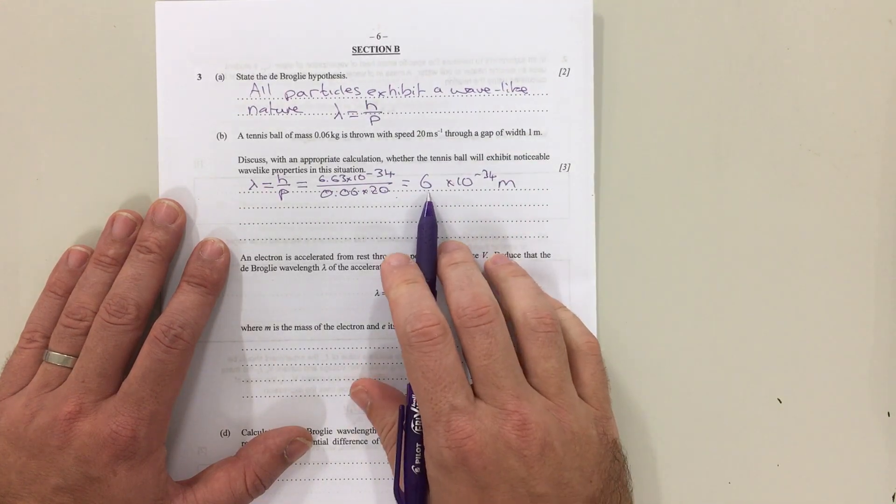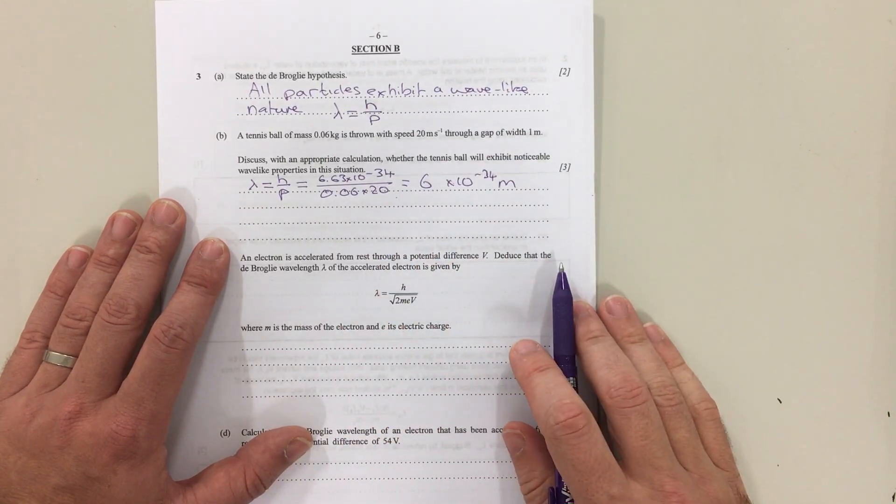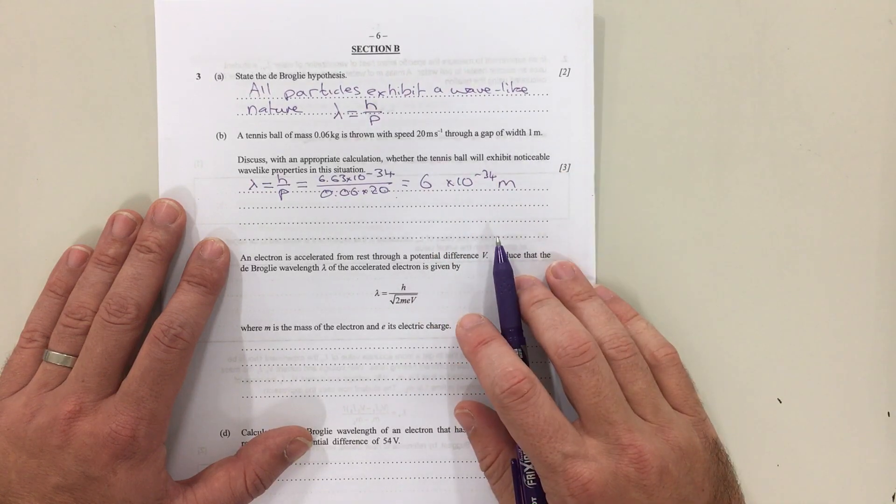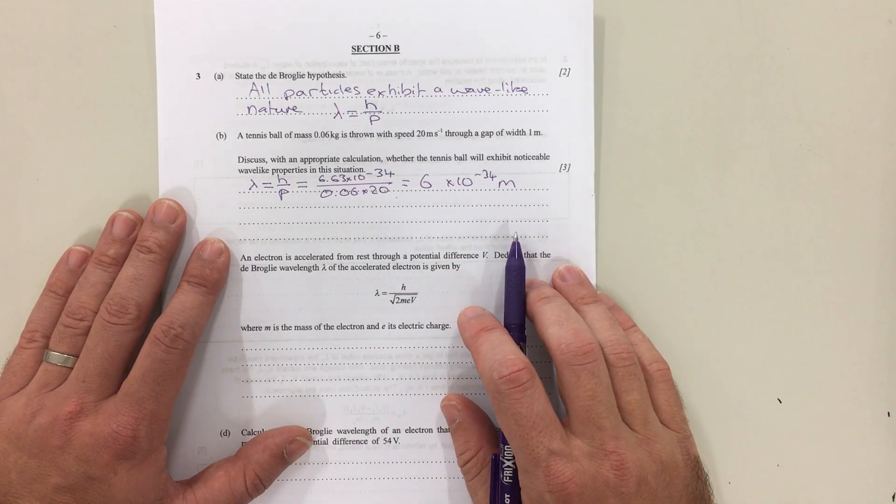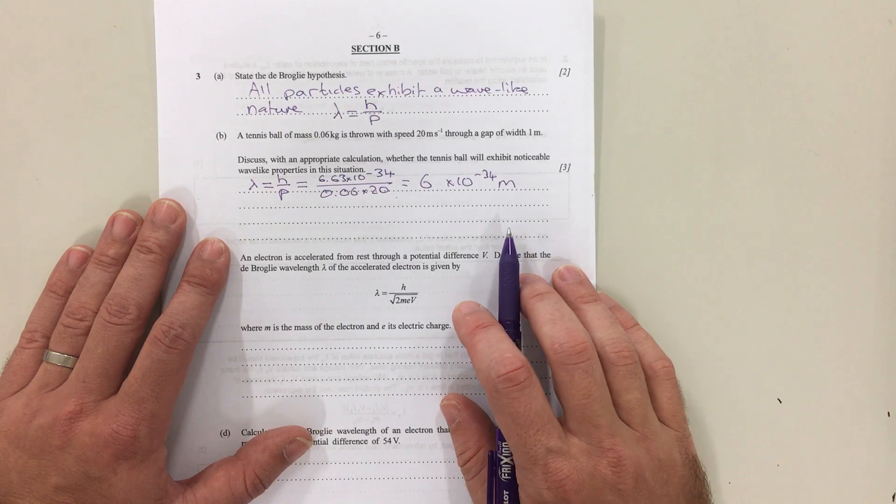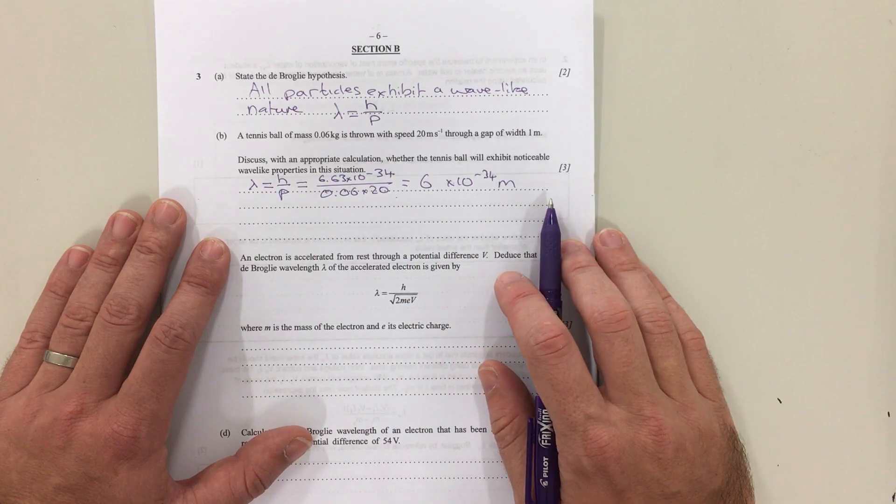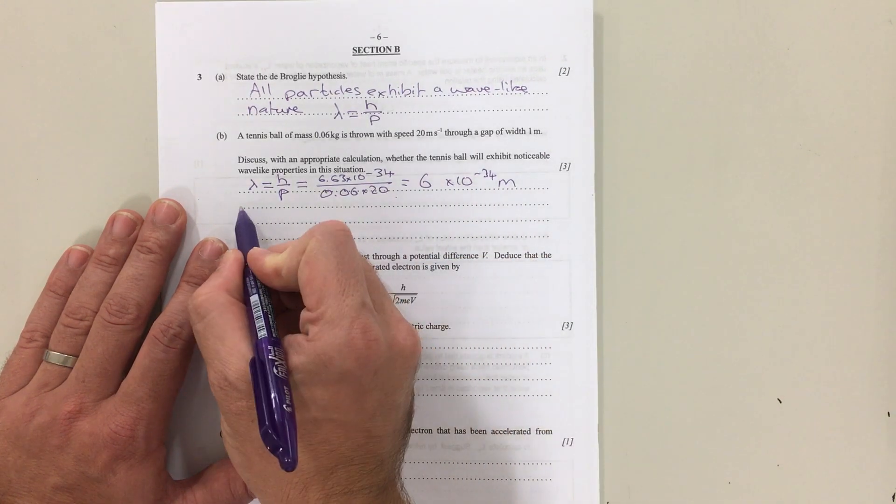Because it's so much smaller, remember diffraction only happens when the wavelength and the gap size are roughly similar, so this will exhibit no diffraction at all and no wave-like properties will be noticeable. That's one way of working out that question.